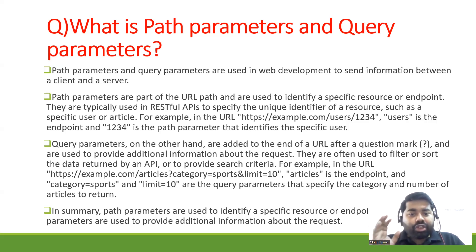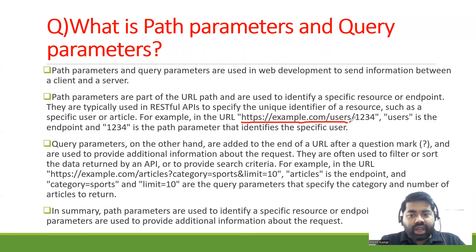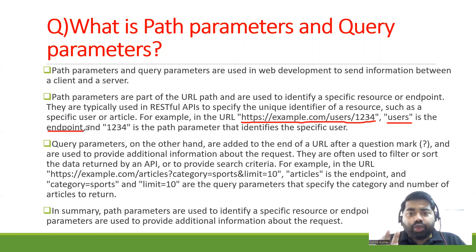They are typically used in RESTful APIs to specify the unique identifier of a resource. For example, we have a URI like '/user/1234' — here 'user' is your endpoint and '1234' is the path parameter that identifies the specific user.